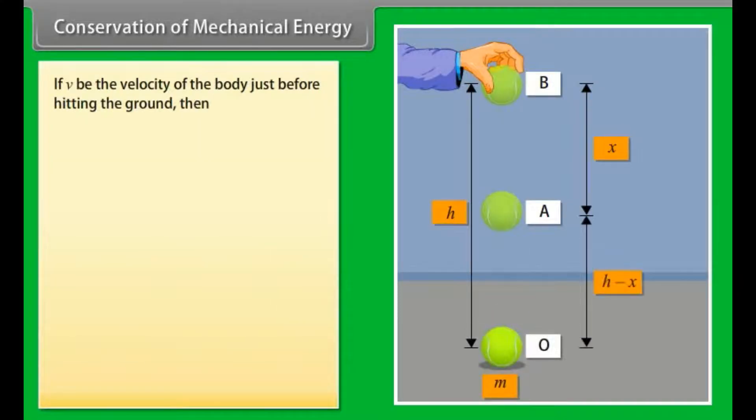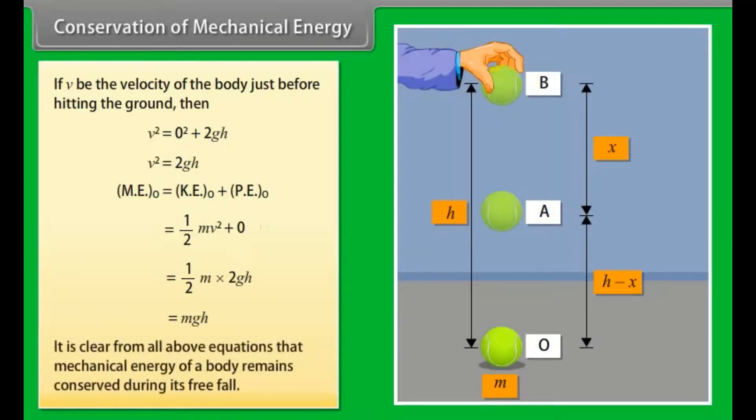If v be the velocity of the body just before hitting the ground, then v² = 2gh. Here mechanical energy of the body at O = kinetic energy at O + potential energy at O. By calculating it we get mechanical energy of body at O is mgh. It is clear from all above equations that mechanical energy of a body remains conserved during its free fall.